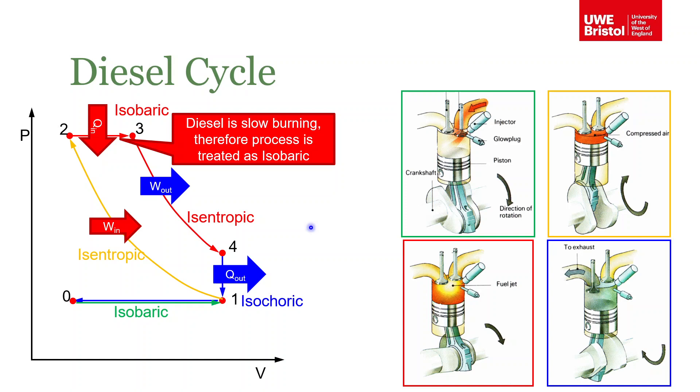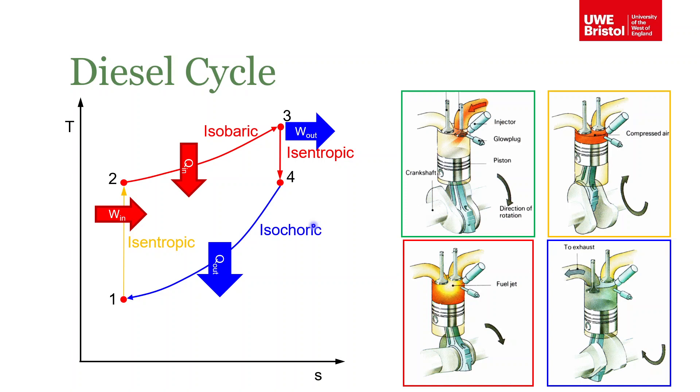You can see there's some similarity and some differences between the diesel and Otto cycle, and it's important to understand that. The main difference is because an Otto cycle is a spark ignition engine - SI engine - and a diesel engine is a compression ignition engine - CI for short.